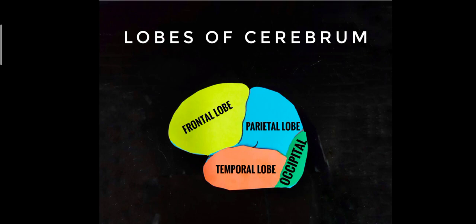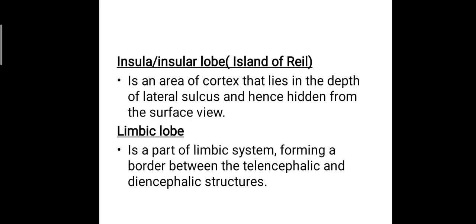Let's discuss the two other lobes: the insular lobe or island of Reil, and the limbic lobe. The insular lobe is an area of cortex that lies in the depth of the lateral sulcus and is hence hidden from surface view. Once you open up the lateral sulcus by separating it to either side, you will find this small area of cortex — that is the insula. The limbic lobe is part of the limbic system forming a border between the telencephalic and diencephalic structures, which will be discussed later in the embryological development of the cerebrum.